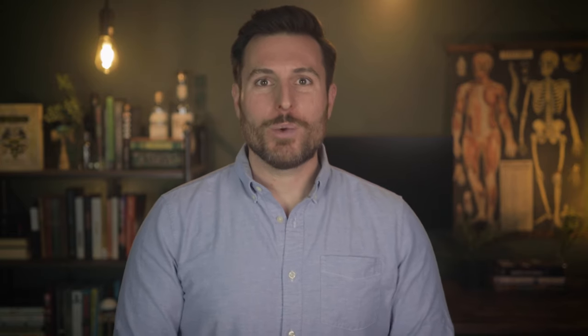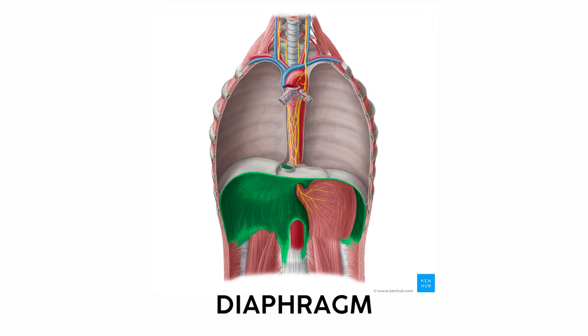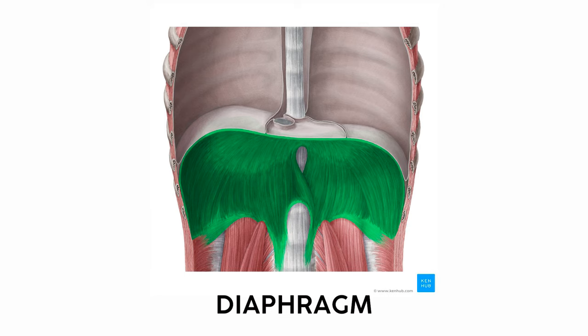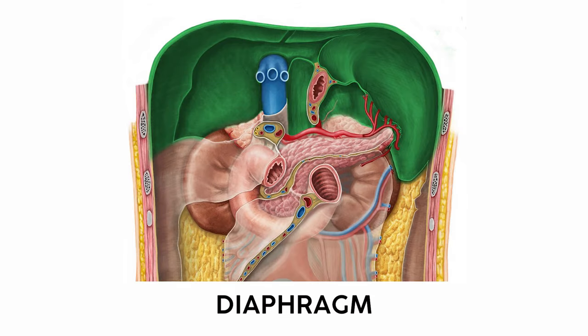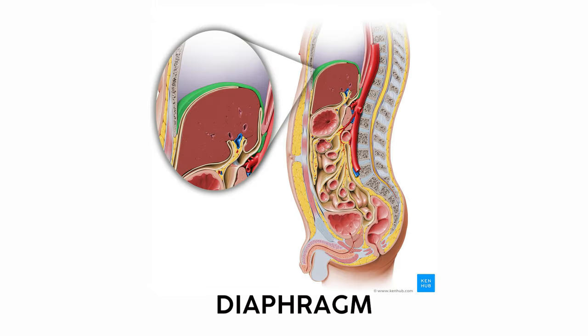Returning to the front of the ribs, we find the transversus thoracis — a group of muscles on the inside of the chest wall making a cool diamond shape around the sternum. I remember this one because it looks like it transverses, or covers, the entire front of the thorax. Finally, the diaphragm. This muscle is so unique and interesting that I never really needed a memory device for it. It's this wide muscle that attaches all over the inside of your body, your main muscle of breathing, and it separates the thoracic cavity from the abdominal cavity. Give the diaphragm the respect it deserves and memorize it on its own — no memory device required.